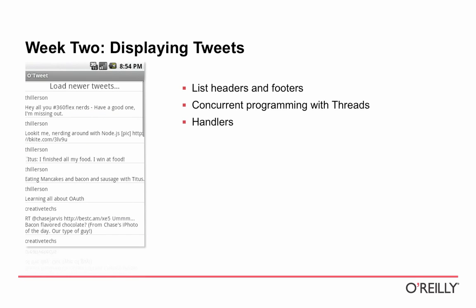In week two, once signed in, we'll load the user's home timeline and display it in a ListView. We'll also cover more advanced ListView features like headers and footers — list items that hold controls rather than data, fitting into the scrollable list. Then we'll start talking about concurrent programming, which is critically important in any UI you're building, because user experience degrades quickly if you're not running long-running operations on background threads.